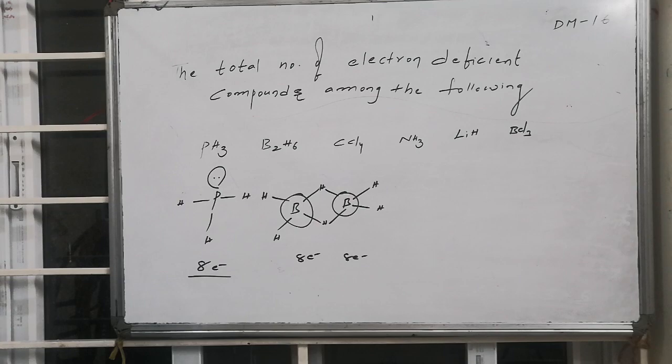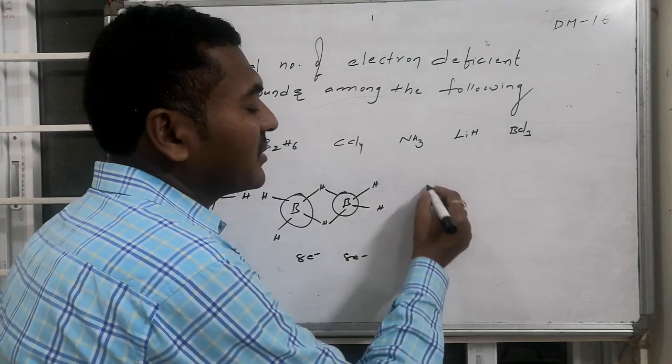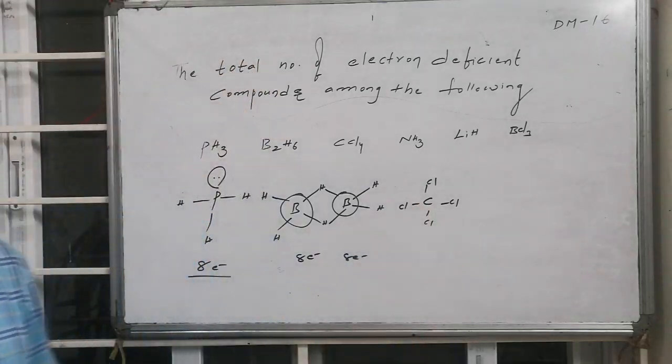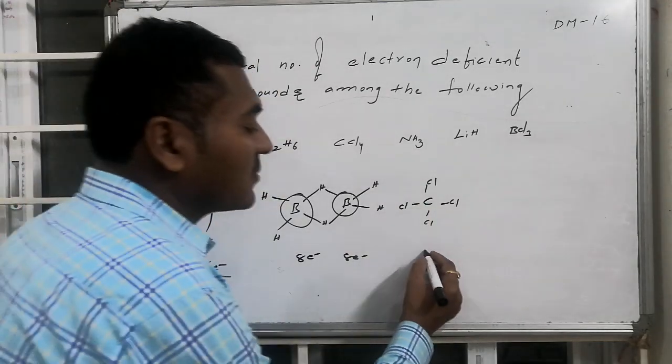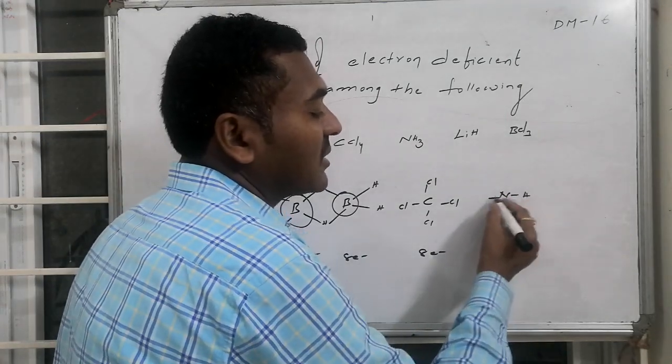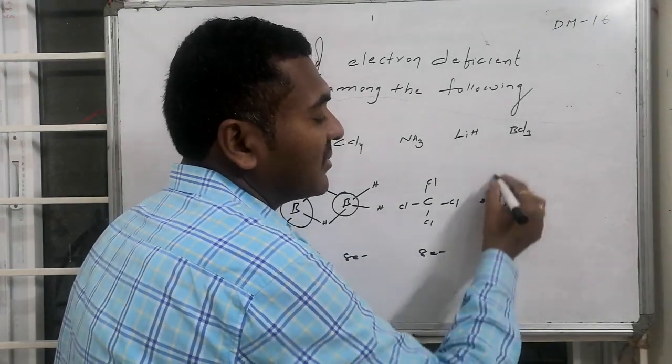As everybody knows, carbon tetrachloride - carbon is connected with how many chlorines? Four chlorines. So therefore the central atom is having eight electrons. Regarding ammonia, similar to that of phosphine, nitrogen is connected with hydrogen having one lone pair.